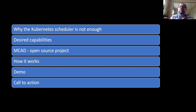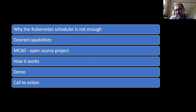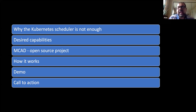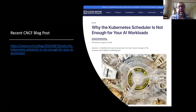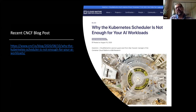We'll also talk about additional desired capabilities on top of the shortcomings we'll discuss. Then we'll show our proposal to address these shortcomings, which is the Multi-Cluster App Dispatcher — an open source project we want to share with you. We'll tell you how it works, show you a short demo, and then a call to action. There was also a recent CNCF blog post with the same title about a couple of months ago, motivating the need for this second-level resource manager.